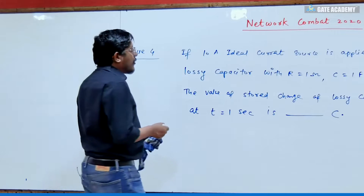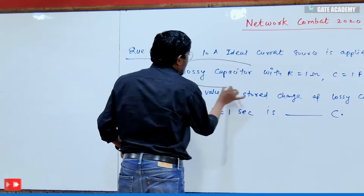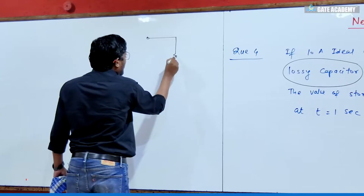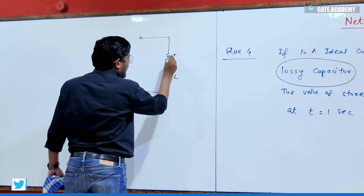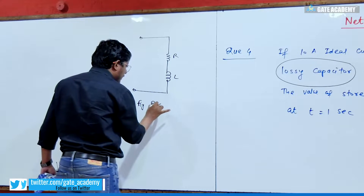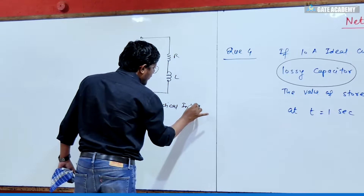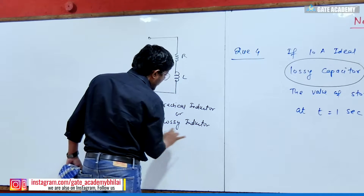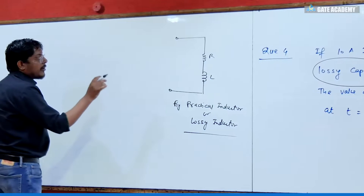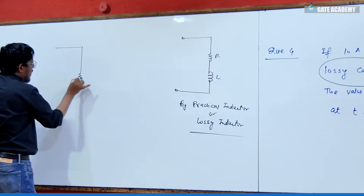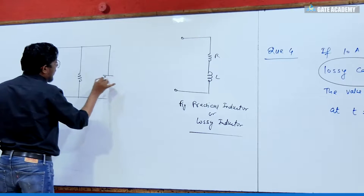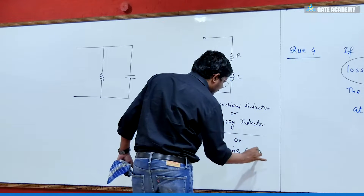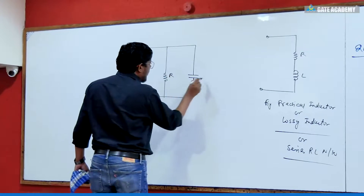What is a lossy capacitor? What is a practical capacitor? Just like a lossy inductor — a practical inductor — it is called a coil or series RL network. When I say a lossy inductor, it is a series RL network with R and L. Similarly, when I say a lossy capacitor or practical capacitor, this is R and C — the parallel RC network.